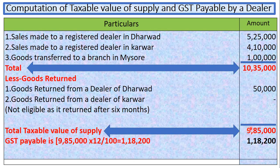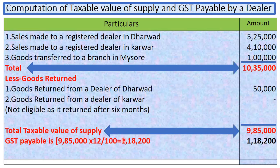On this total taxable value of supply of 9,85,000, we are going to calculate tax at the rate of 12%, giving us 1,18,200. In this problem we were asked to calculate the taxable value of supply, and once we calculate that, the ultimate figure we calculate is the GST amount payable. This is an important 14-mark question. If you have any clarifications, you can post your comments in the comment box, and I will come up with many more videos. Until then, thank you. Goodbye.